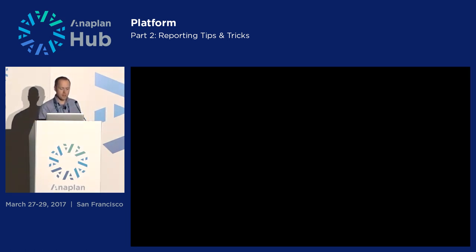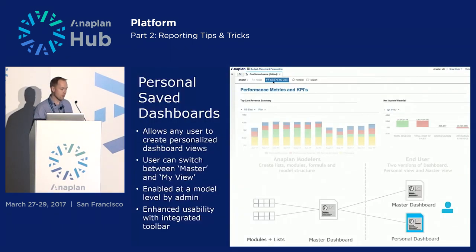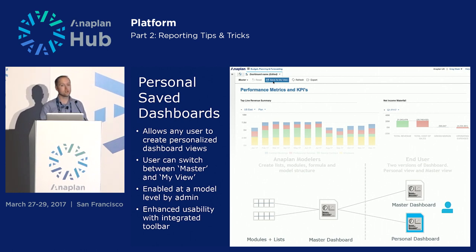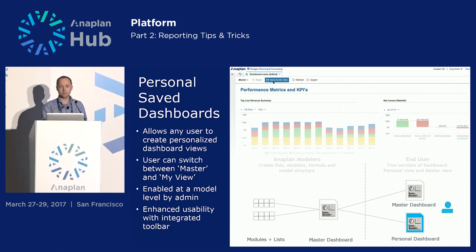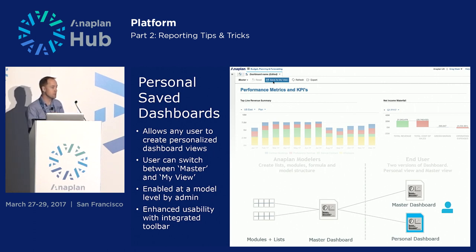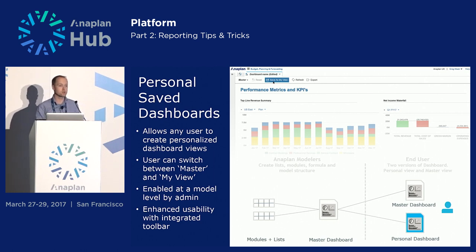So in recap for the personal save dashboards: this allows any user to create personal dashboard views, saving any changes that can currently be done in runtime mode — pivots, page selectors, hide/show, sorts, filters, all those things. The user can switch between the master view and their own personal view. This will be disabled by default when we release it, in case you don't want end users saving personal views, but you can enable it at model level if you're an admin.